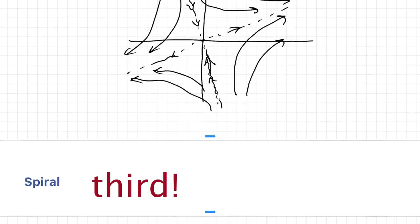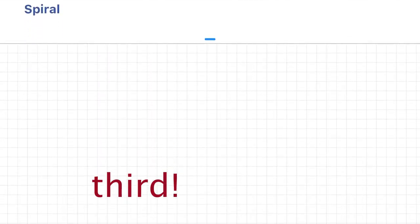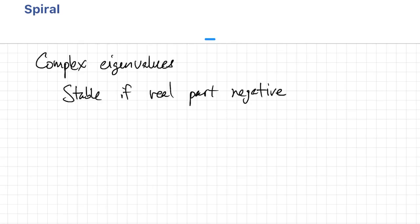The fourth major type of fixed point is a spiral point. This is the result when we have truly complex eigenvalues. If the real part of those eigenvalues is a negative or non-positive number, it'll be stable.